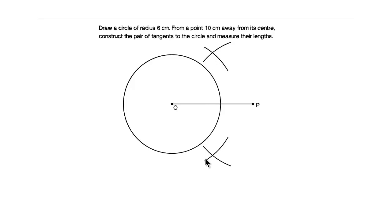Now join these two intersection points of the arcs that you have drawn and get the perpendicular bisector of the line OP which divides the line OP into two equal halves.